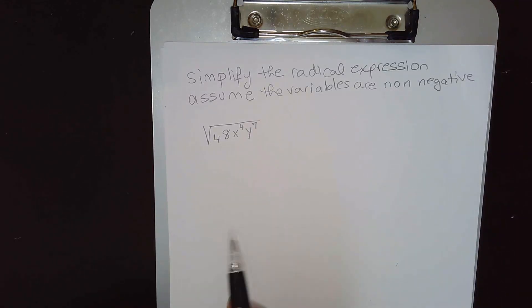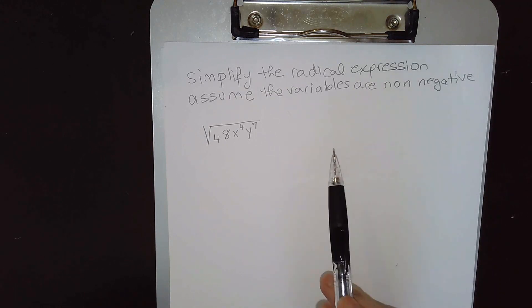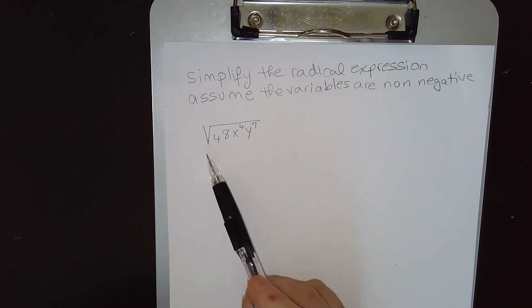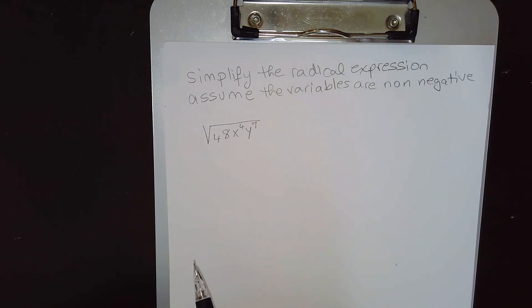Hello everybody, today we're going to simplify the radical expression. We're going to assume the variables x and y are non-negative. So we have the square root of 48x⁴y⁷.